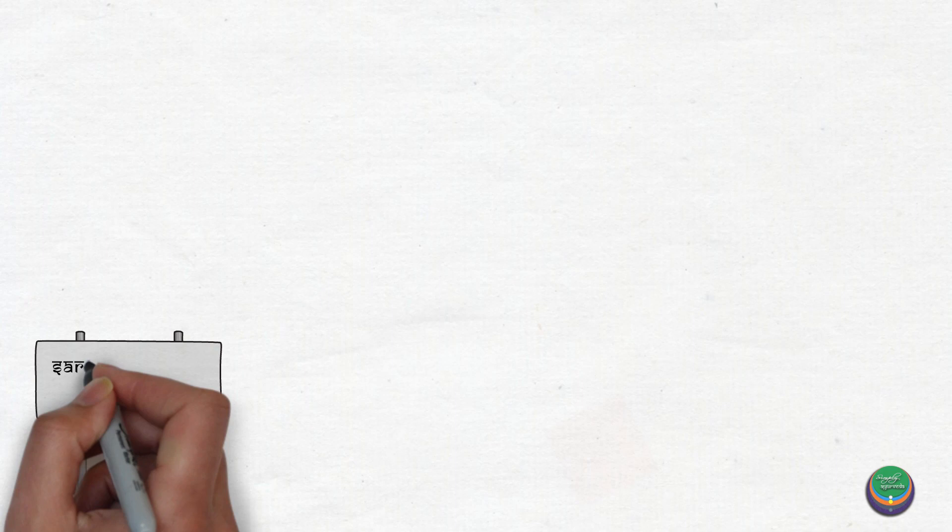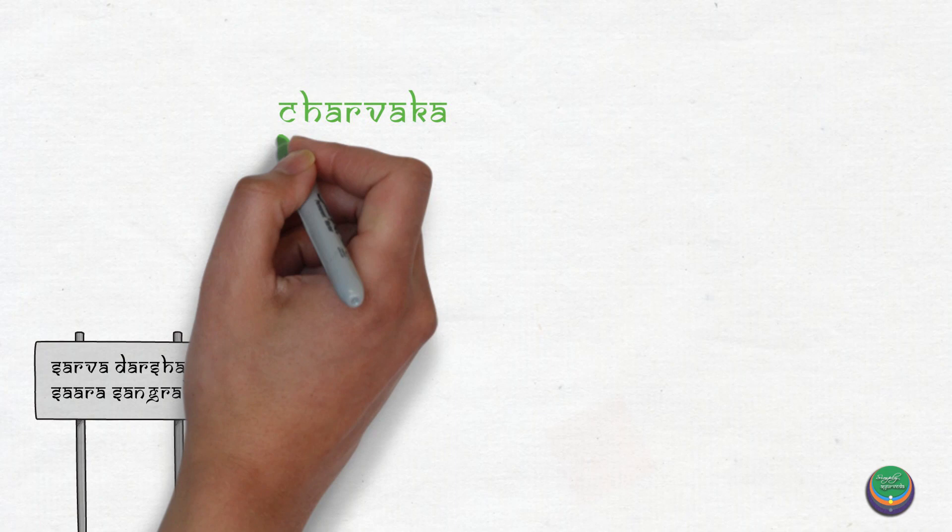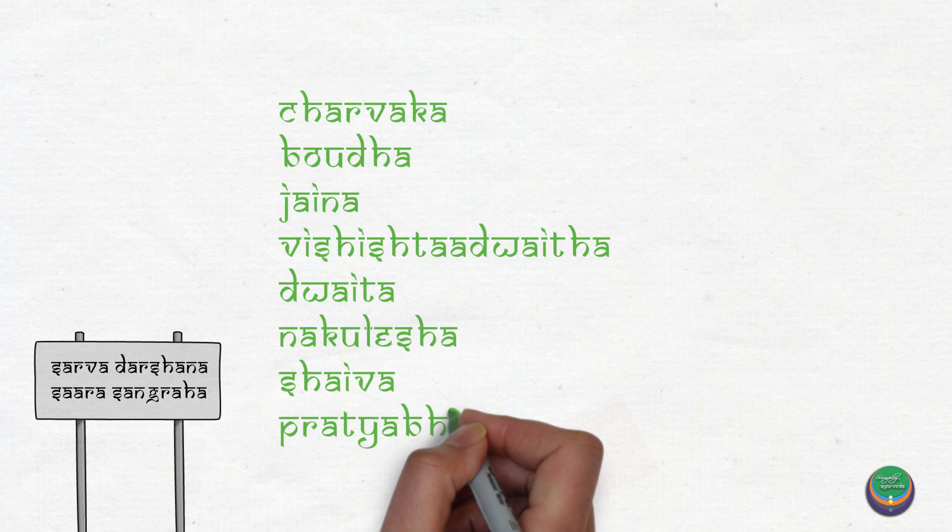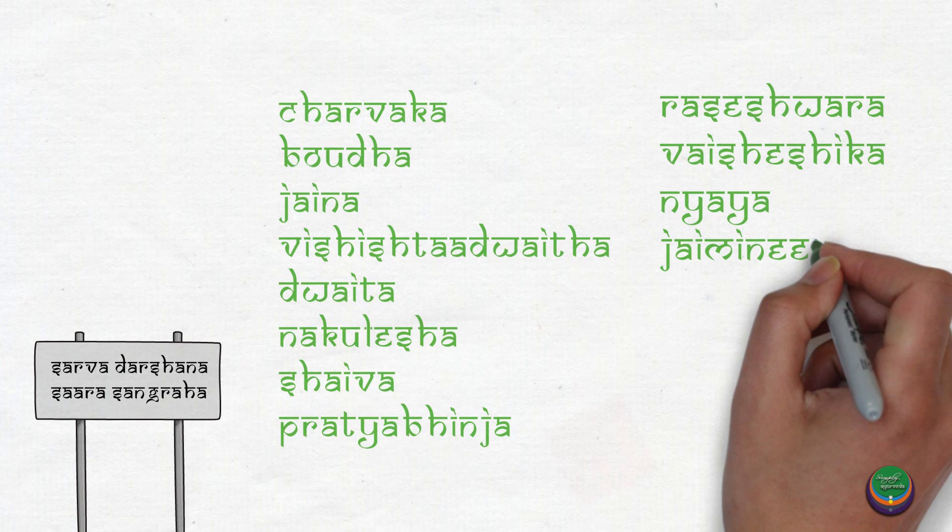Let us now understand the enumeration of darshanas in India. According to Sarva darshana sara sangraha, there are fifteen darshanas mentioned. They are Charvaka, Bhauda, Jaina, Vishishtadvaita, Dvaita, Nakulesha, Shaiva, Pratyabhitya, Raseshwara, Vaisheshika, Nyaya, Jaimaniya, Paniniya, Sankhya, and Yoga.